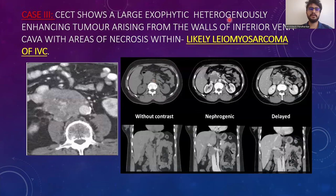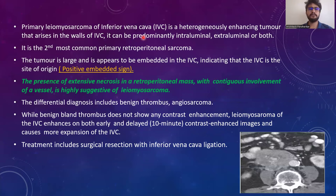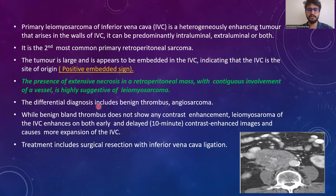Case 3: Axial CCT shows a large exophytic heterogeneously enhancing tumor arising from the walls of the IVC with areas of necrosis — likely a case of leiomyosarcoma of the IVC. Primary leiomyosarcoma of the IVC is a heterogeneously enhancing tumor that can be predominantly intraluminal or extraluminal, and is the second most common primary retroperitoneal sarcoma. The positive embedded sign indicates the IVC as the site of origin. Extensive necrosis with contiguous vessel involvement is highly suggestive of leiomyosarcoma. Differential diagnosis includes benign thrombus or angiosarcoma; benign thrombus shows no enhancement, while leiomyosarcoma enhances on both early and delayed phases and causes more IVC expansion. Treatment includes surgical resection with IVC ligation.